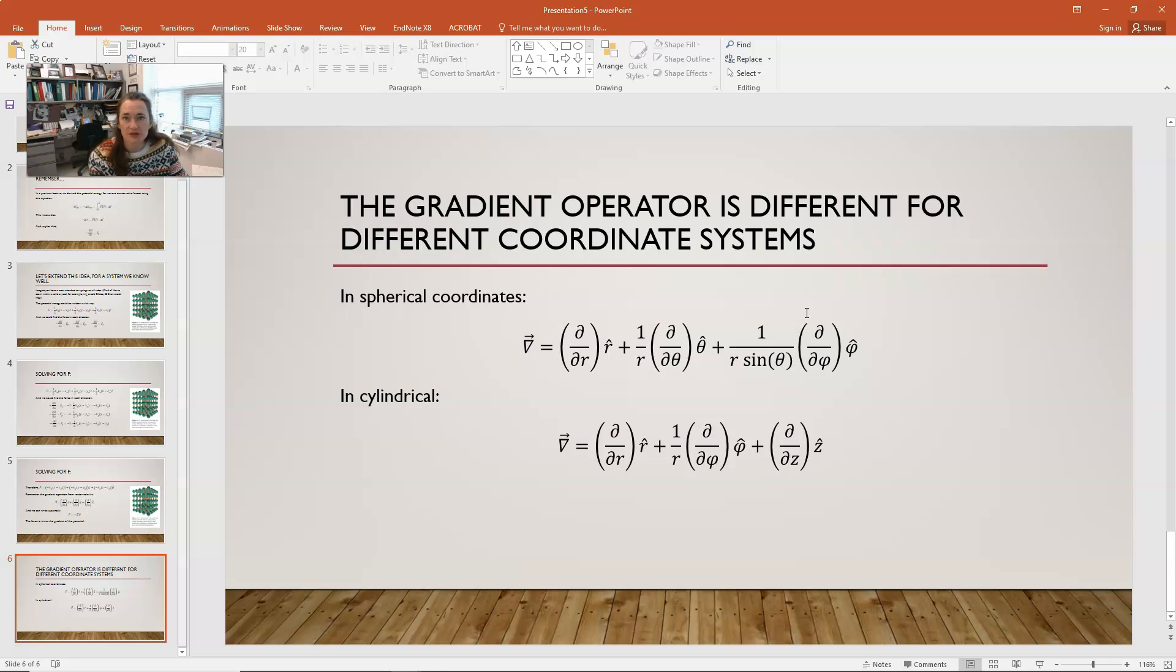So, the gradient operator in spherical coordinates, I'm sorry, is the grad is equal to partial with respect to r, r hat, plus 1 over r times partial with respect to theta, theta hat, plus 1 over r sine theta times partial with respect to phi, phi hat. So, it's a little more complex.